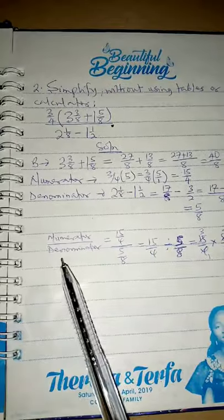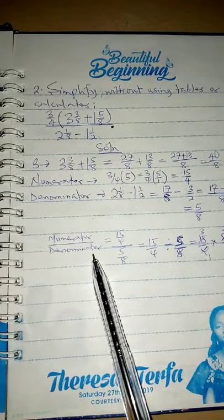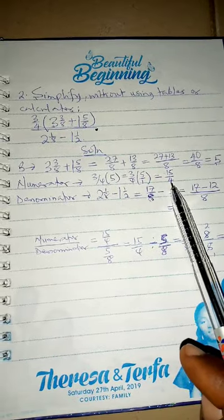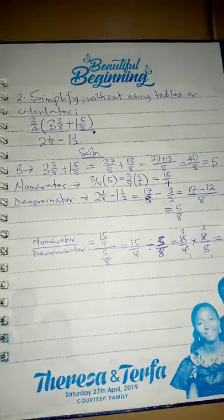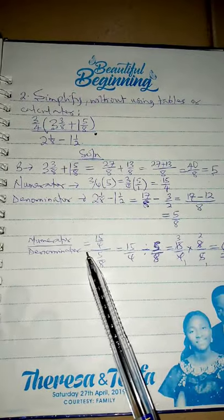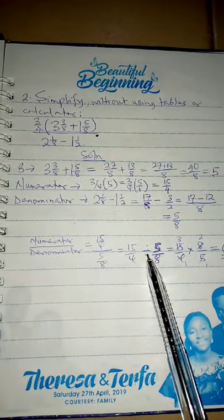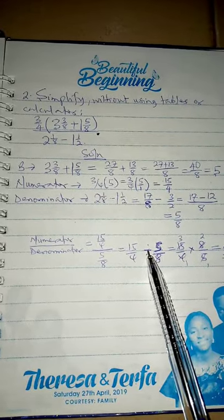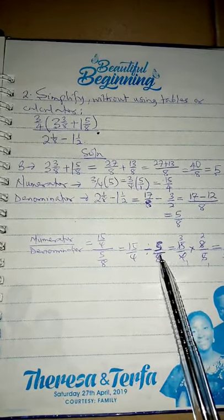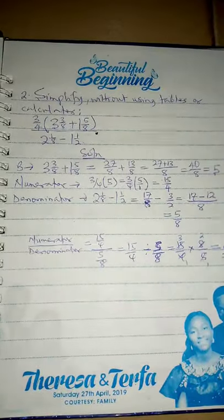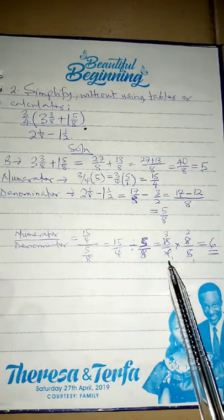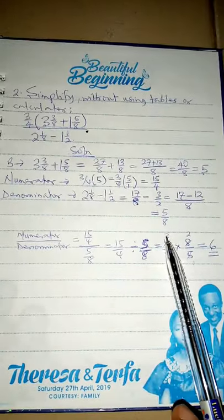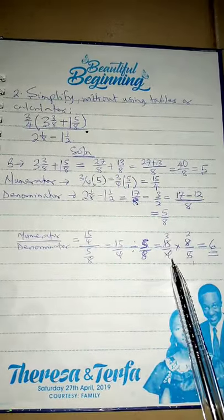Now divide the numerator by the denominator: 15 over 4 divided by 5 over 8. Change the division sign to multiplication and flip 5 over 8 to become 8 over 5. Four divides into 8 two times; 5 divides into 15 three times. So three times two over one is 6. The answer is 6.